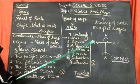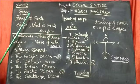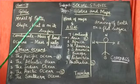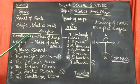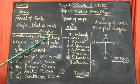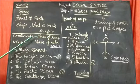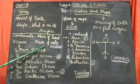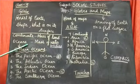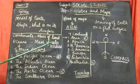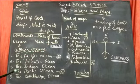Now on the globe if you see, you can see that there are two main things that is land and water. So the large masses of land is known as continent. Large mass of land is known as continent and large masses of water bodies are known as oceans. Oceans are large masses of water bodies. Understood?